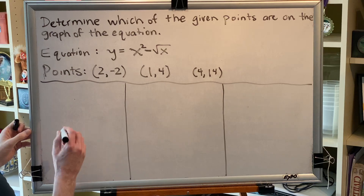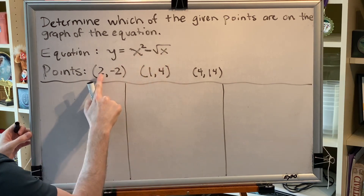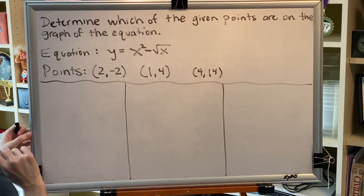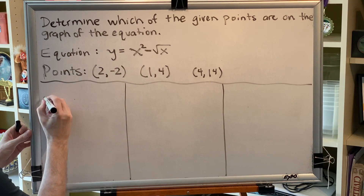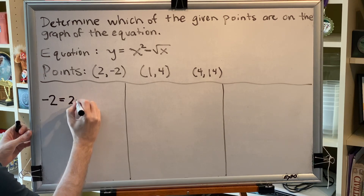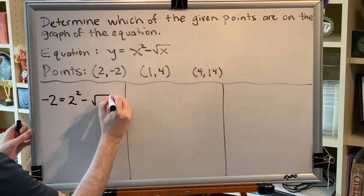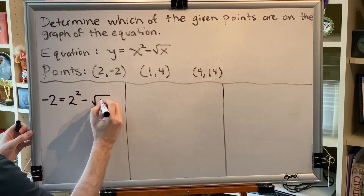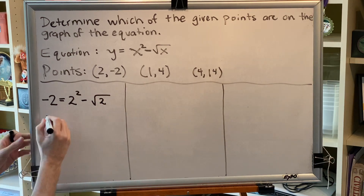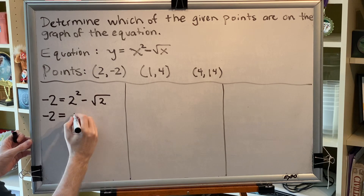We replace each x with the x-coordinate and each y with the y-coordinate. So we're going to have negative 2 equals 2 squared minus the square root of 2. Now we simplify: negative 2 equals 4 minus the square root of 2.